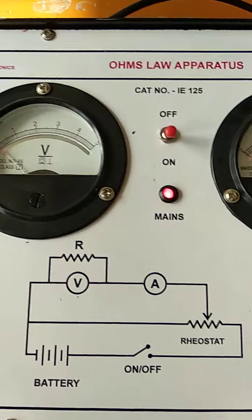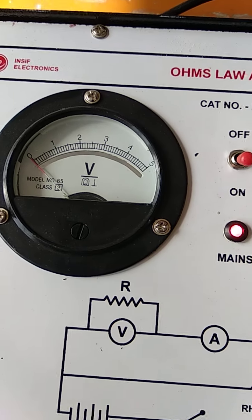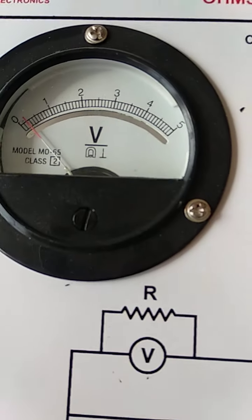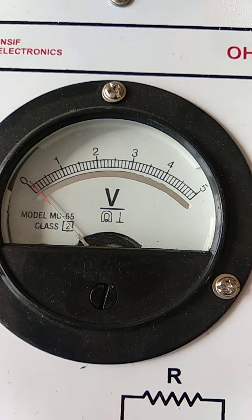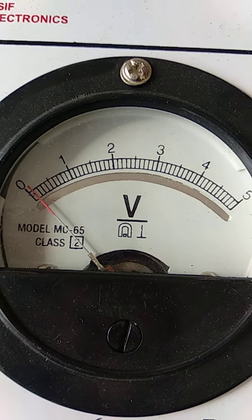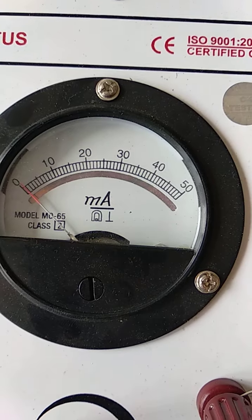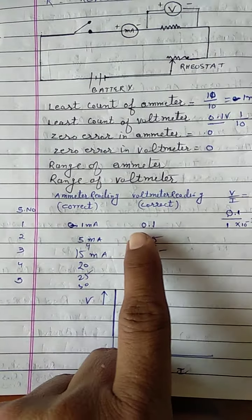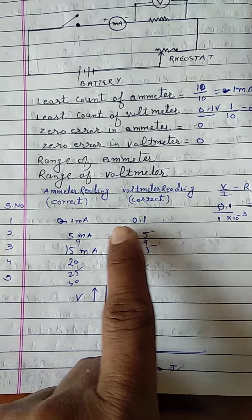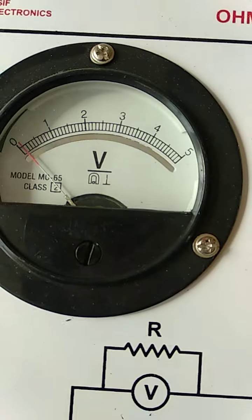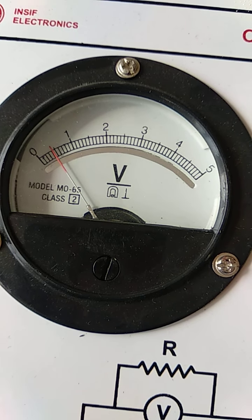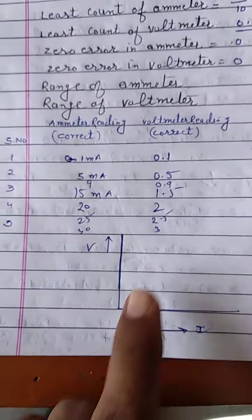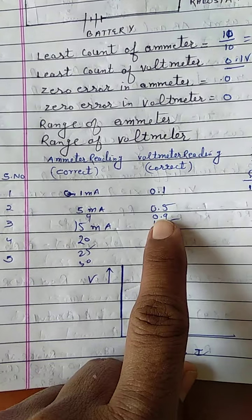So now according to Ohm's law the potential difference V, you can just observe it here. I am just increasing the reading from here. This button you can see here. This become 0.1. You can easily observe 0.1 volt. Here you can also see, this is 0.1 milliampere. Ammeter reading and voltmeter reading. Voltmeter reading is 0.1, it is 1 milliampere. I am increasing the reading. You can see here. When it become 0.5 you can see here it is become 5 milliampere. 0.5 is 5. When I increase 0.9 it will become 9.